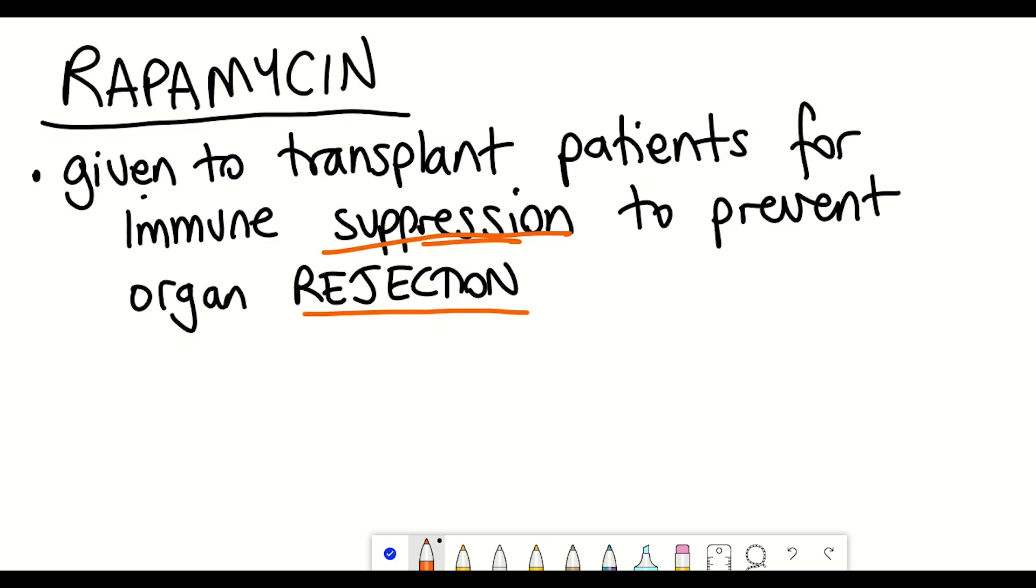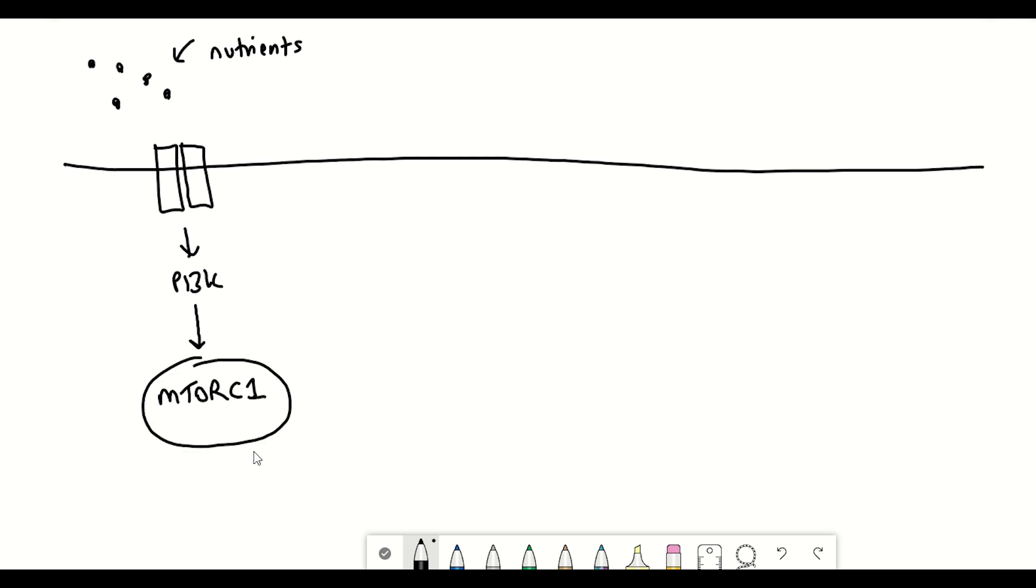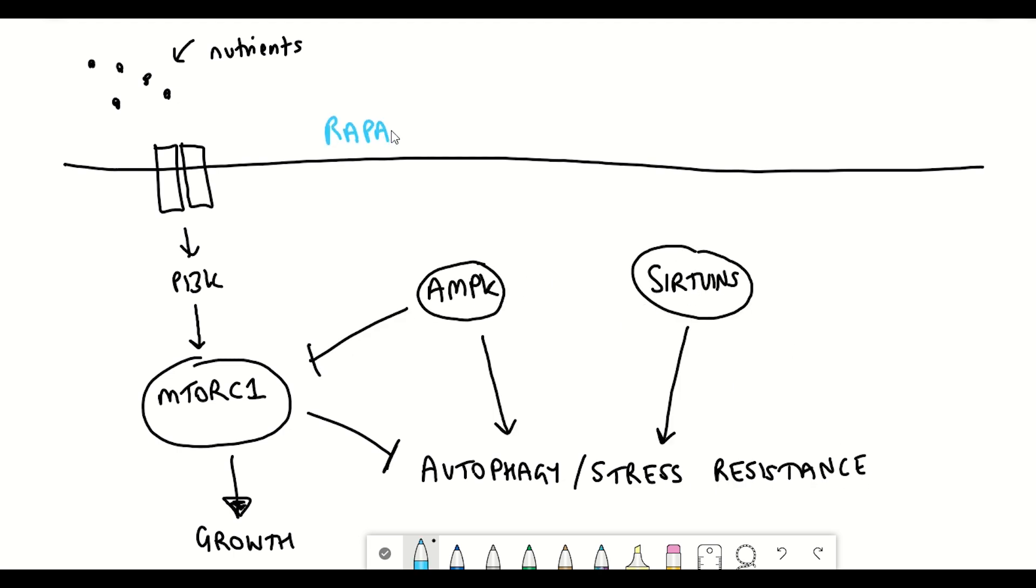And so it turns out I haven't really spoken about rapamycin before on this channel, but the way that it acts is by inhibiting the mammalian target of rapamycin complex 1, so the target was named after rapamycin's discovery, hence the name. And mTORC1 as a complex is really important in regulating metabolism and growth within a cell. And so by inhibiting this activity, it reduces signaling through the growth pathways and instead converts signaling more towards stress resistance.